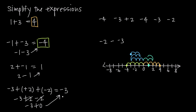We can look at subtraction in multiple ways. For example, 2 plus negative 1 is the same as 2 minus 1. If it helps, you can make everything addition by inserting parentheses. So negative 4 minus 3 plus 2 minus 4 minus 3 minus 2 becomes negative 4 plus negative 3, plus positive 2, plus negative 4, plus negative 3, plus negative 2 — connecting everything with addition and removing the subtraction.